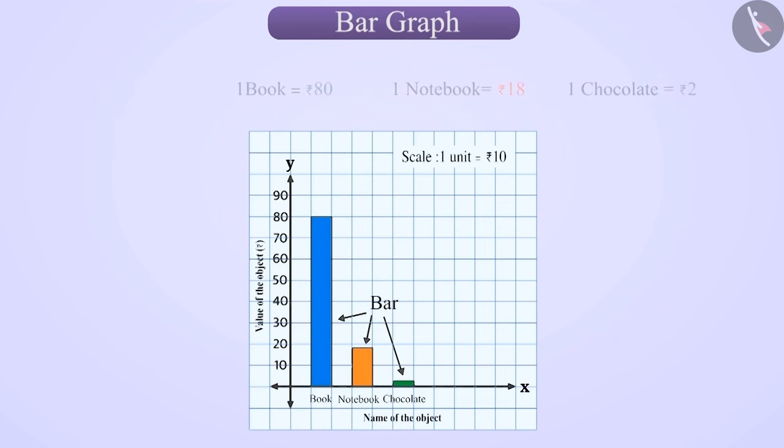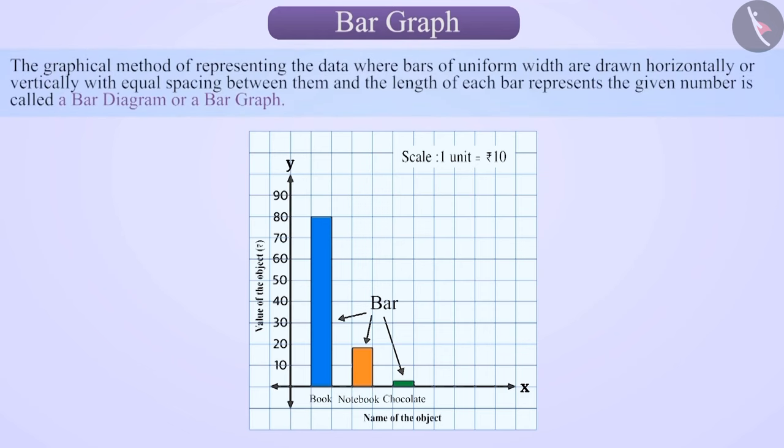Thus, we can say that the graphical method of representing the data where bars of uniform width are drawn horizontally or vertically with equal spacing between them and the length of each bar represents the given number is called a bar diagram or a bar graph.